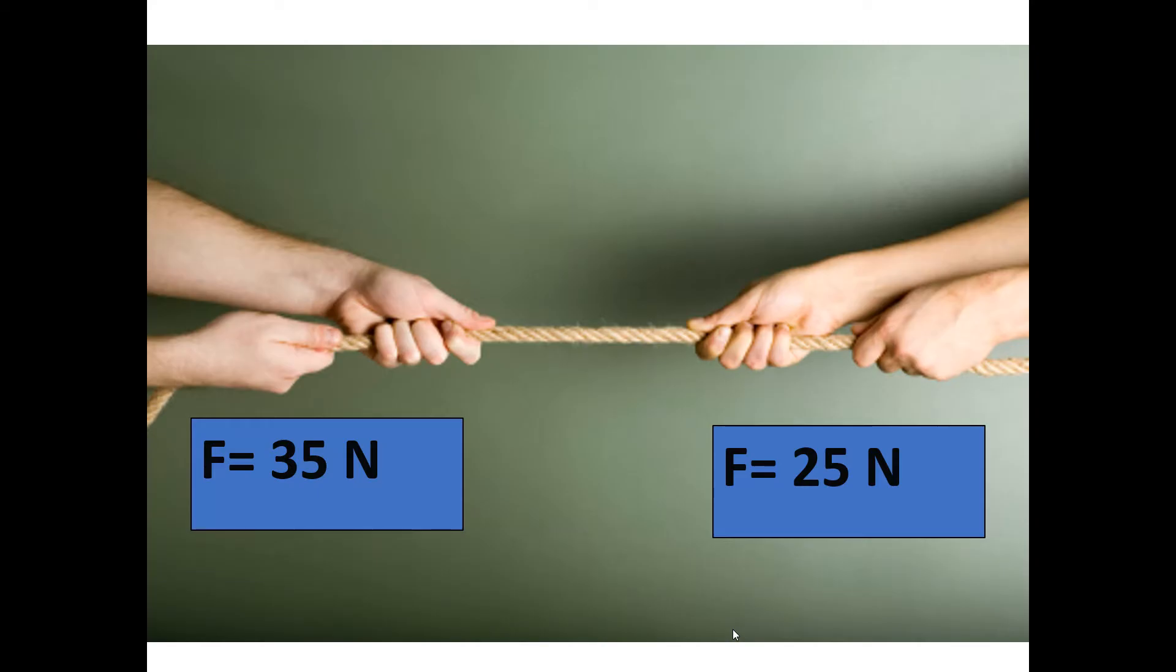In this example, we have a force of 35 Newtons pulling to the left, a force of 25 Newtons pulling to the right. Again, opposing forces. We subtract, and so we have a net force of 10 Newtons. And then if I ask you for directionality, you would tell me to the left.